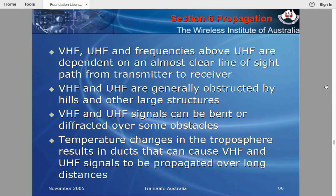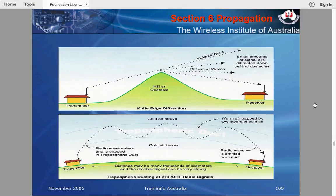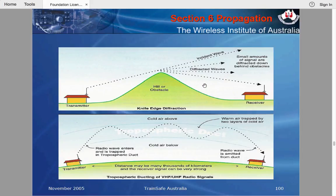With tropospheric ducting, VHF and UHF signals can travel a long way. These two diagrams show a transmitter and receiver: generally waves travel in a straight line, but if they hit the top of a hill or building they get diffracted — which is why you can sometimes pick up signals on the other side of a hill. If you're located in the shadow zone, you may not pick up any signal at all.